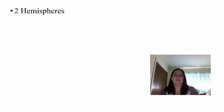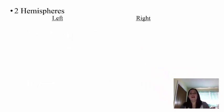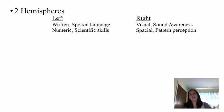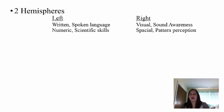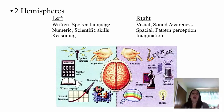Looking at the two hemispheres: the left side is more for written and spoken language, while the right side is more for visual and sound awareness. The left side handles numeric and scientific skills, whereas the right side handles spatial or pattern perception — like seeing where things fit in 3D building or construction tasks. The left side is associated with reasoning, whereas the right side is more imagination. This gives you an idea of the differences between the two hemispheres in pictorial form.